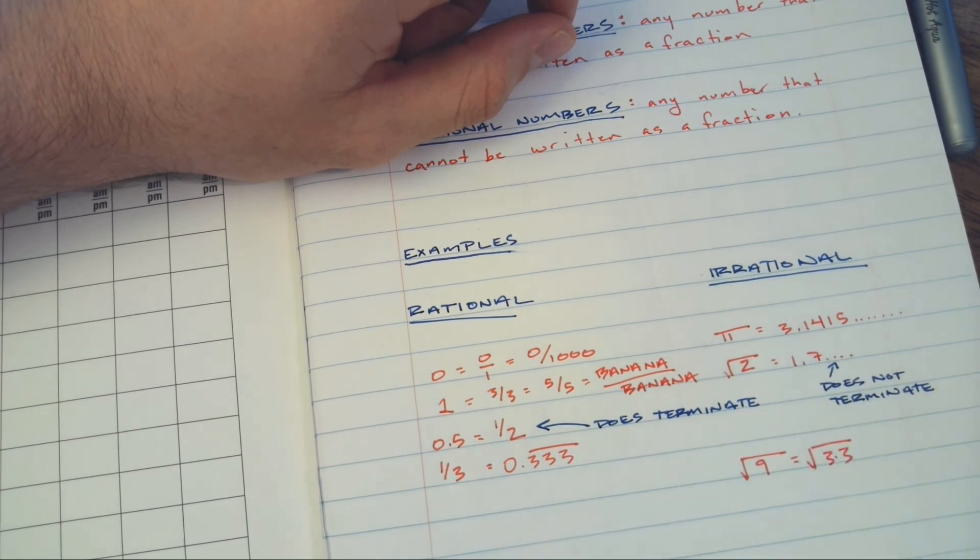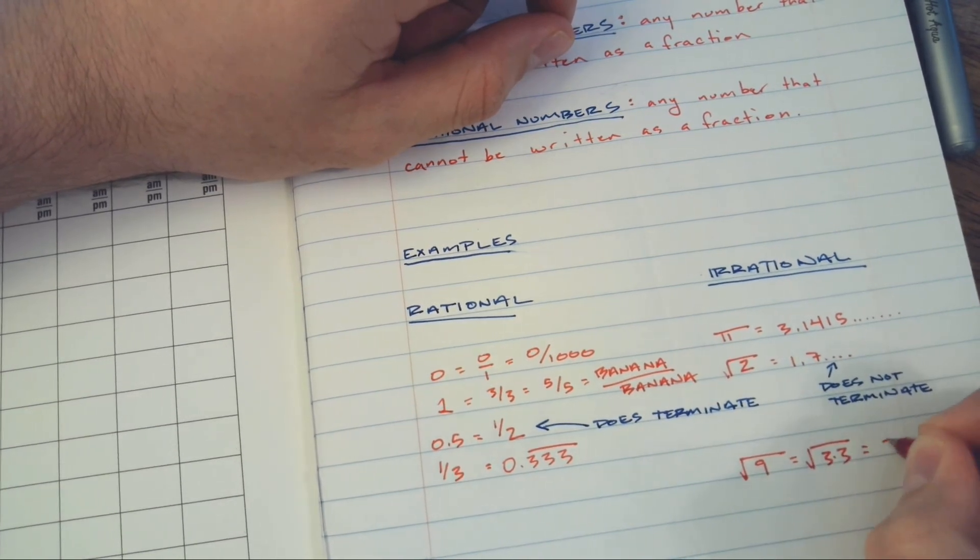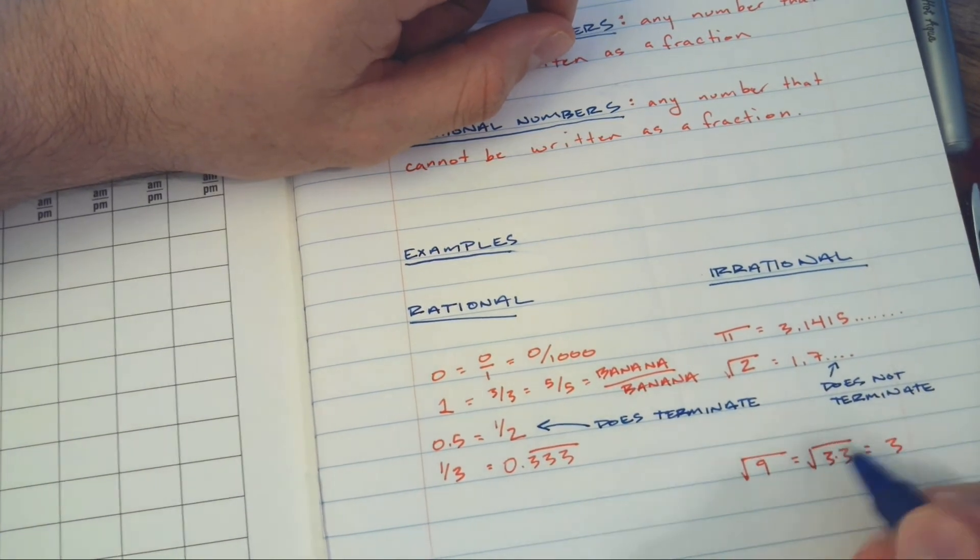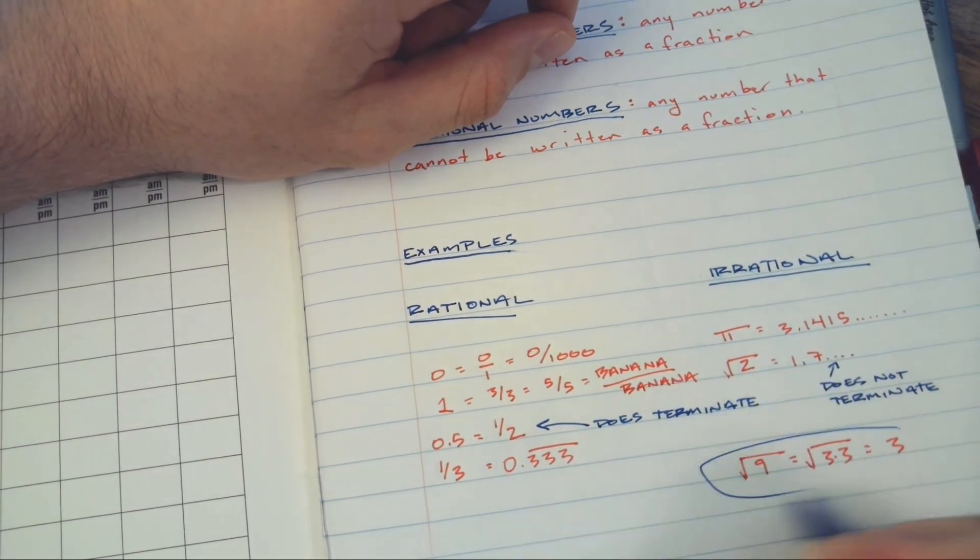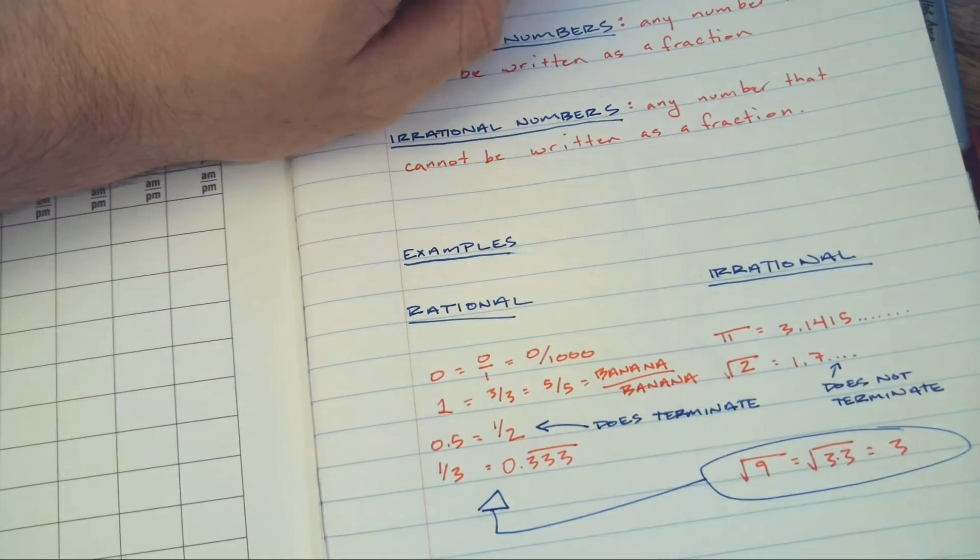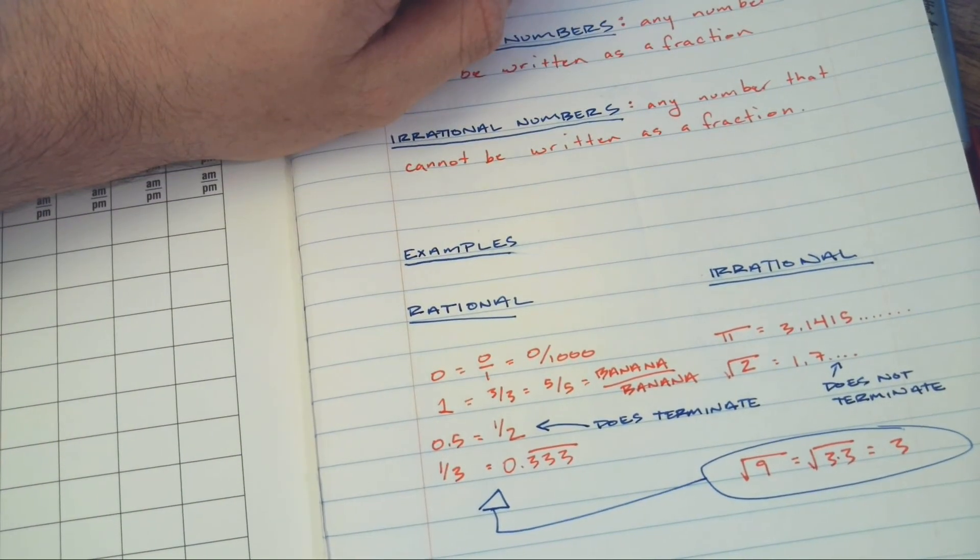That's basically asking the question: what times itself equals nine? Well, that's going to be three times three. The square root of nine is just going to be three. So while we might have originally thought that it belonged over here, in fact it should be over here in this column - it should be a rational number.